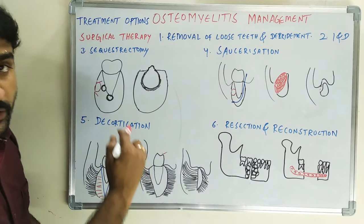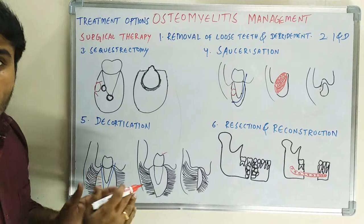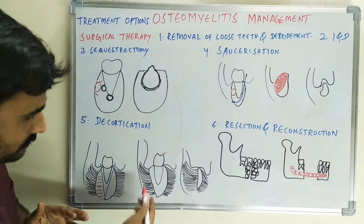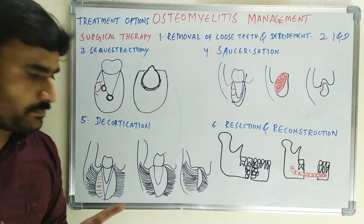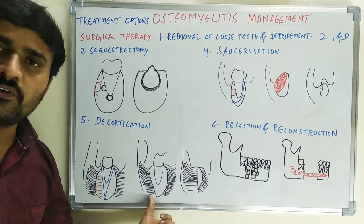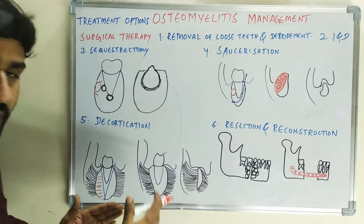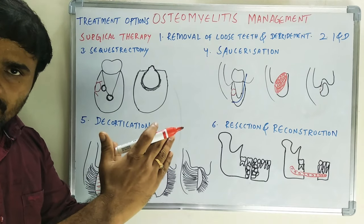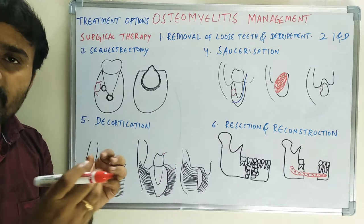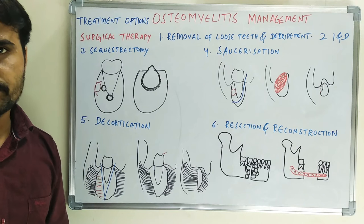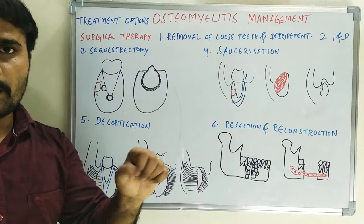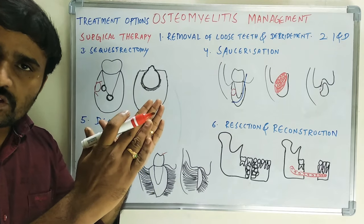The buccal mucosa is directly attached over the sectioned lateral cortex, creating intimate contact between the buccal mucosal flap and the medullary bone. This increases blood supply to the medullary bone — one of the most important advantages of decortication: it improves vascular supply by approximating the mucosal flap to the medullary bone.